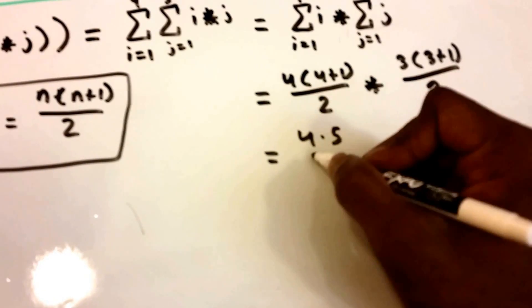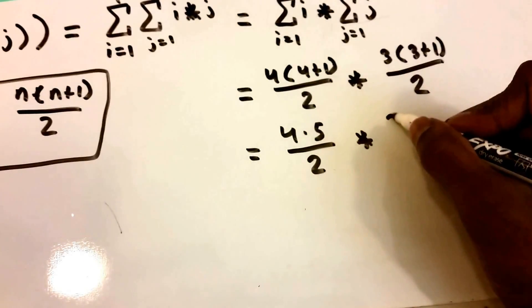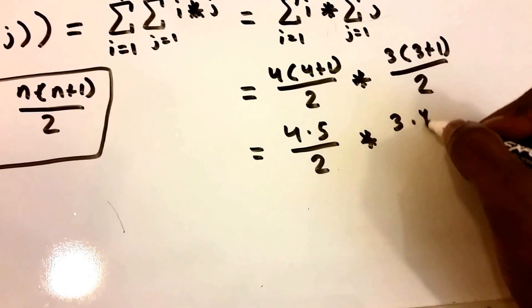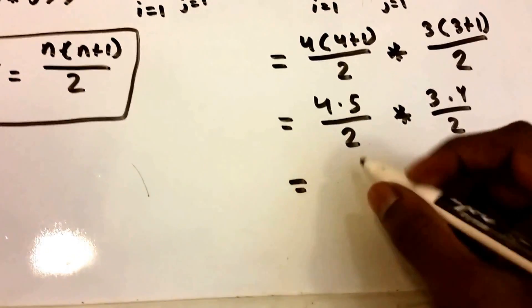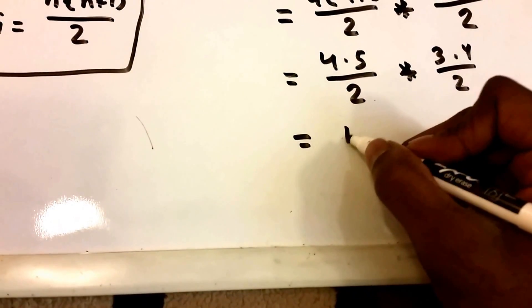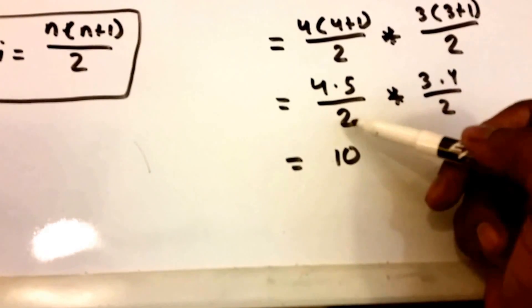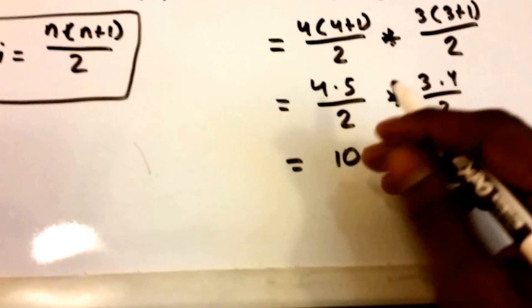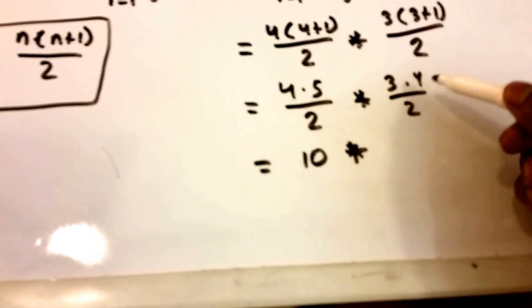Okay, and let's see, we get 4 times 5 divided by 2 times 3 times 4 divided by 2, and this is equal to 10. I'm just going to go ahead and multiply the 4 and 5 and divide it by 2, so I'm kind of technically skipping a step but that's okay.